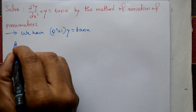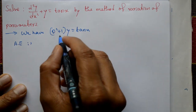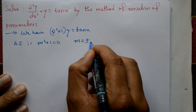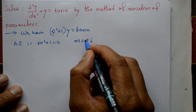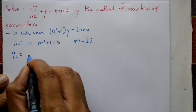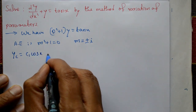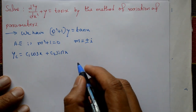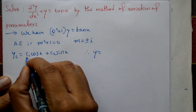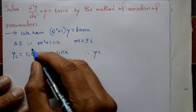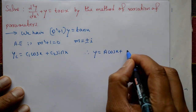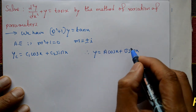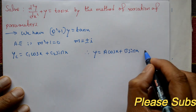The auxiliary equation is m² + 1 = 0, giving m = ±i. These are complex roots with alpha = 0, beta = 1. So the complementary function is c1·cos x + c2·sin x. Therefore y = a·cos x + b·sin x, and we need to find a and b by substituting into equation 1.